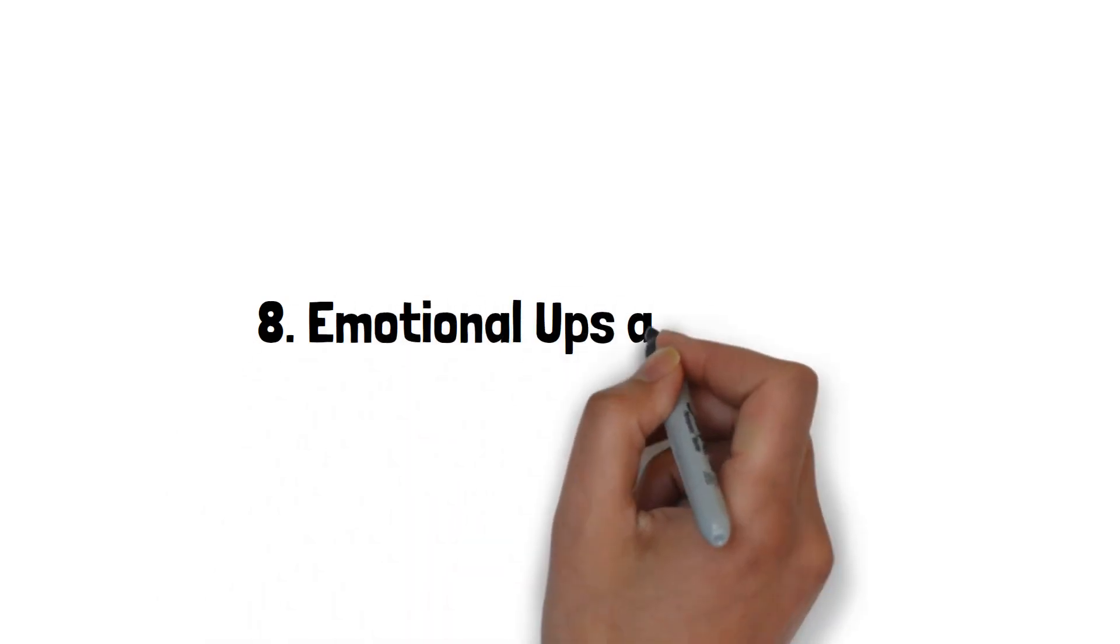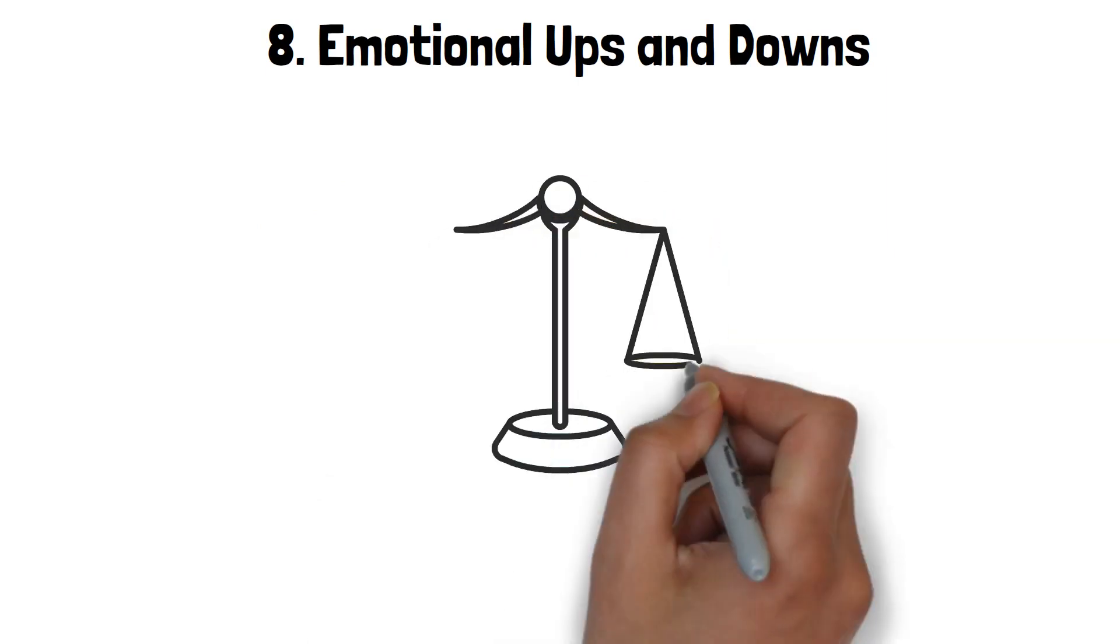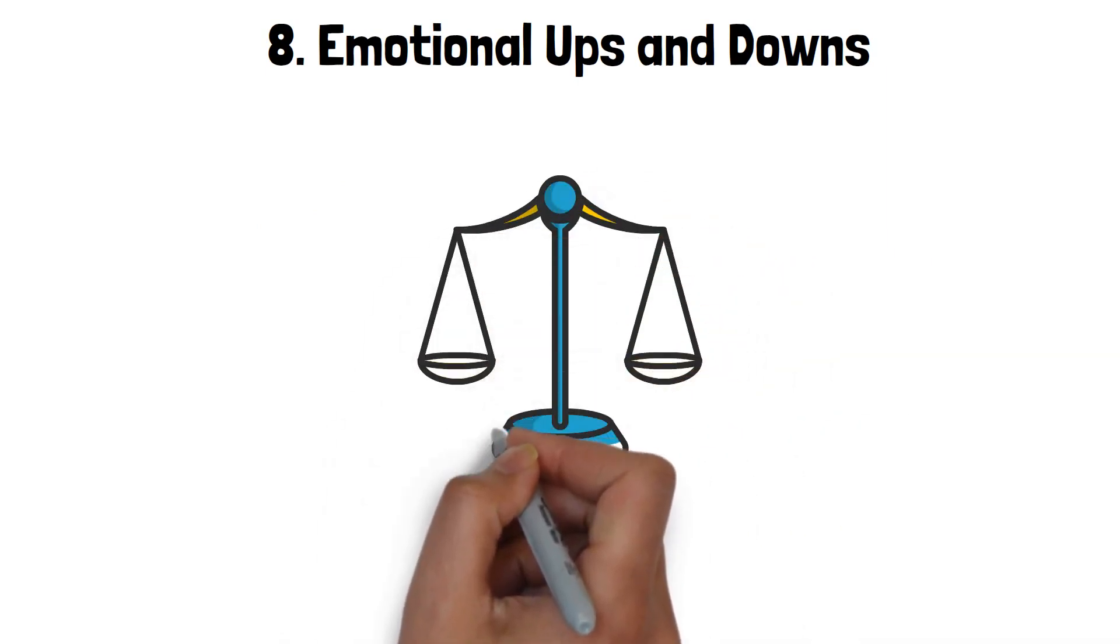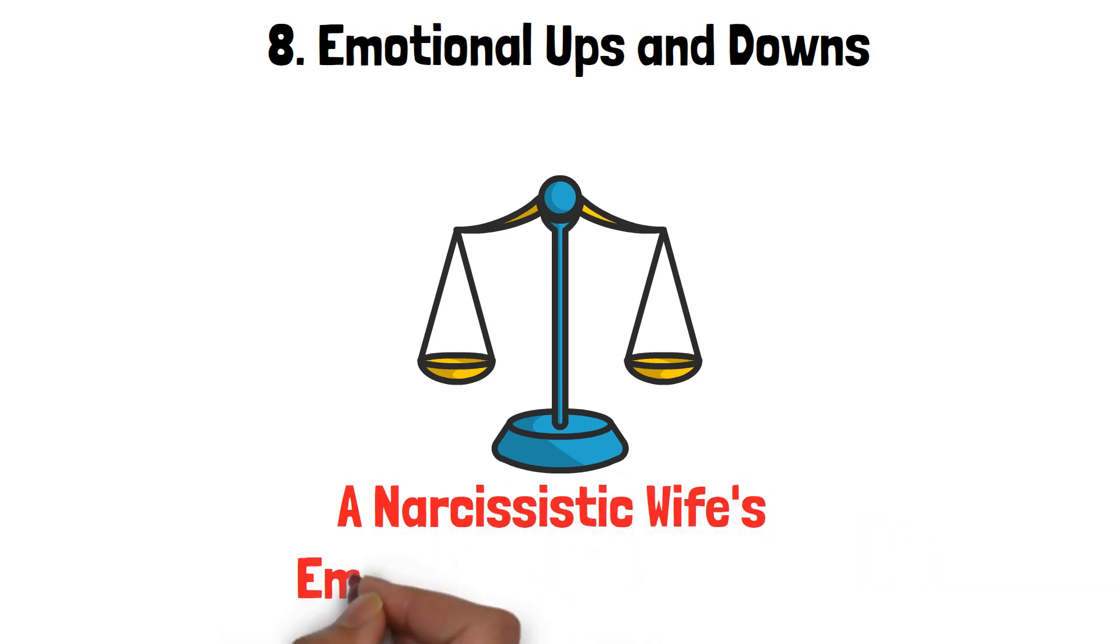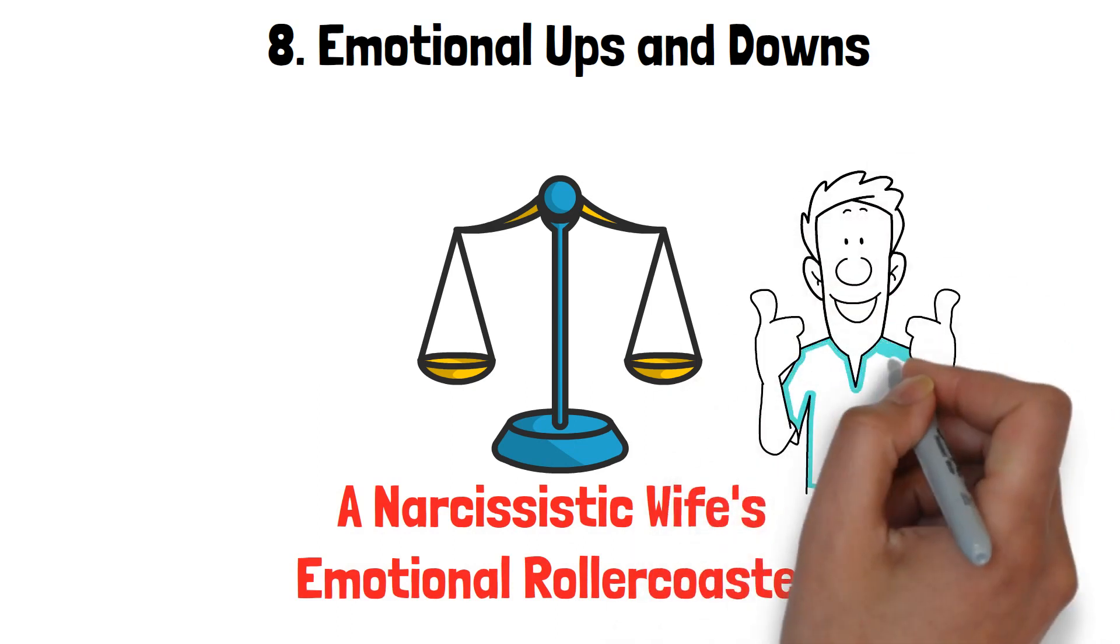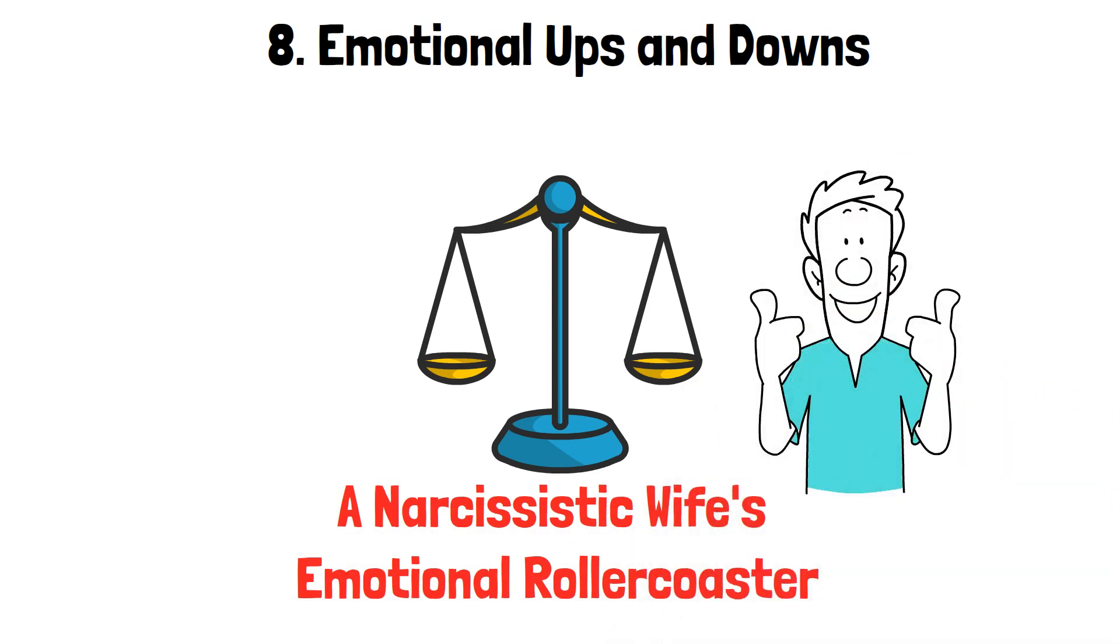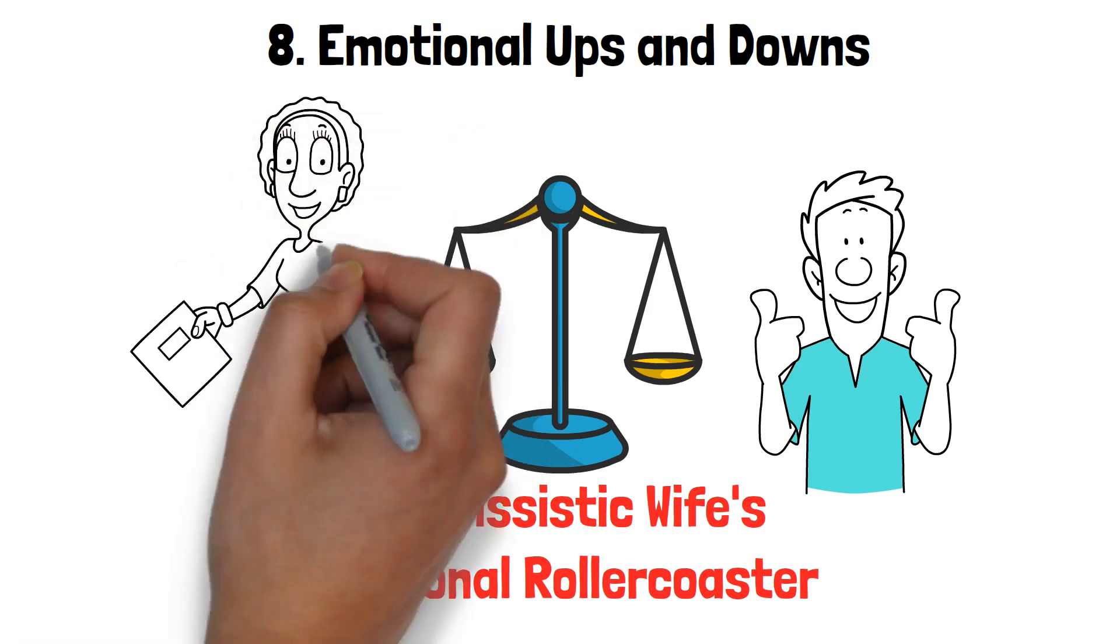8. Emotional Ups and Downs. Imagine trying to balance on a seesaw with no warning when it might tip. That's what it's like to deal with a narcissistic wife's emotional rollercoaster. One moment, she's elated and on top of the world, exuding confidence and radiance. But the very next, she might plummet into a deep well of despair, often over seemingly trivial matters.